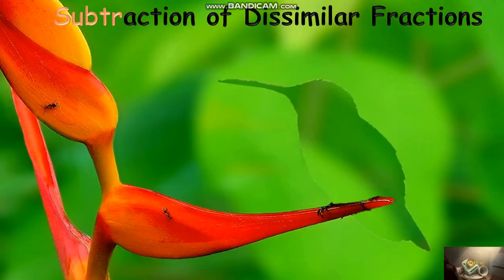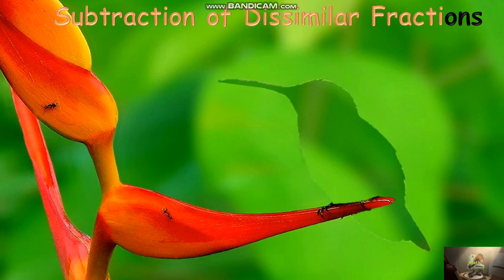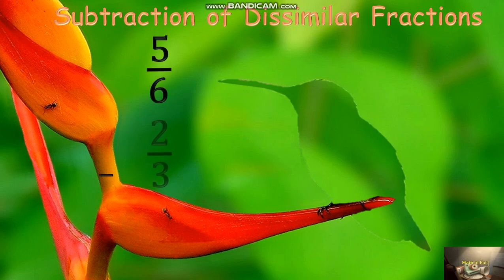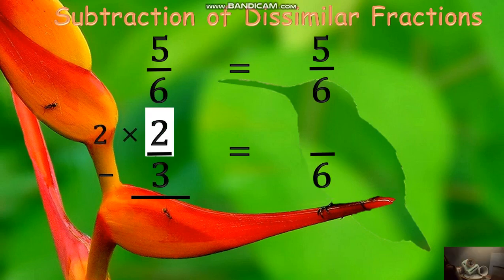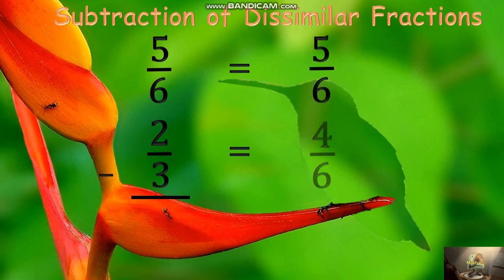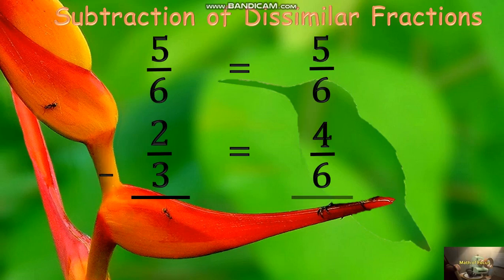How to perform subtraction of unlike fractions using LCD. Find the LCD of 5 sixths and 2 thirds, which is 6. Divide 6 by 6 equals 1, multiply by 5 equals 5. Another: 6 divided by 3 is 2, times 2 equals 4. Subtract now: 5 sixths minus 4 sixths. Subtract the numerators: 5 minus 4 equals 1, and copy the denominator 6. The difference is 1 sixth.